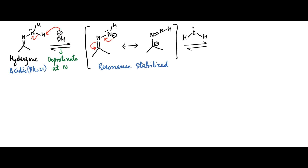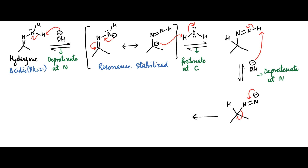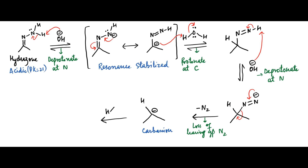In the second step, this resonance stabilized intermediate is protonated at carbon, giving a species with a nitrogen-nitrogen double bond. Then the second proton from nitrogen is also abstracted by base, forming an intermediate with a negative charge on nitrogen. This intermediate loses a molecule of nitrogen gas irreversibly to form a carbanion, which is then protonated to generate the product.